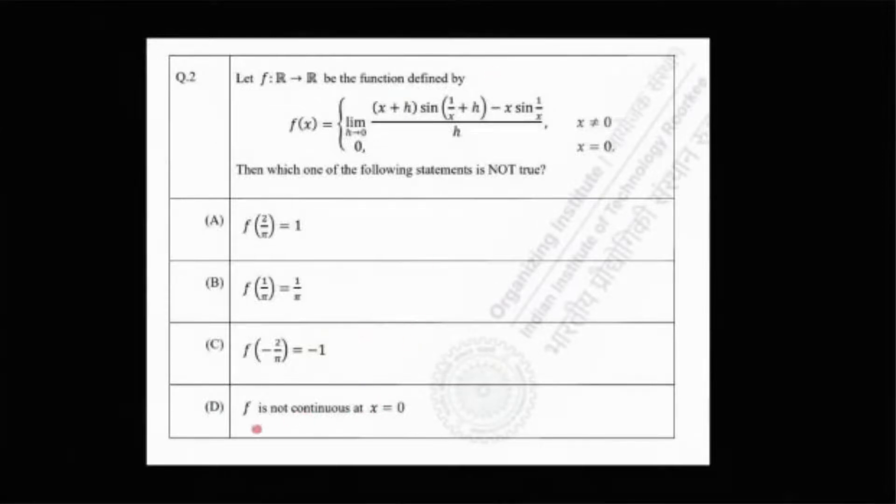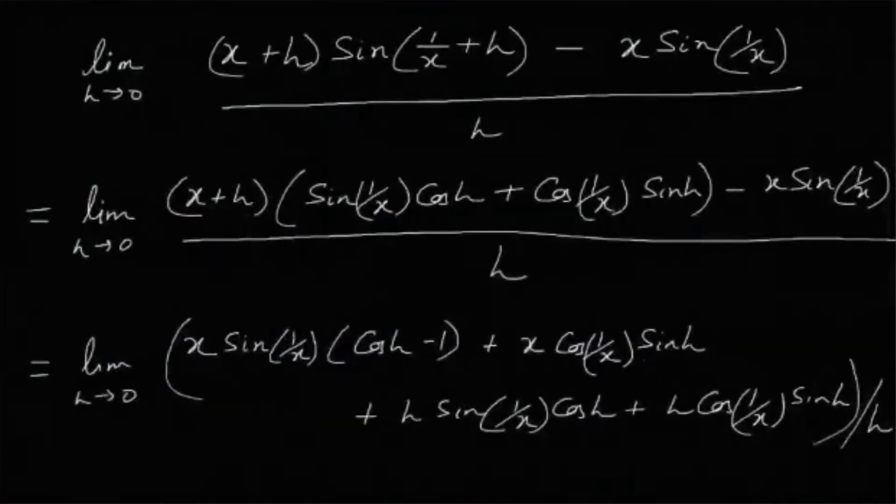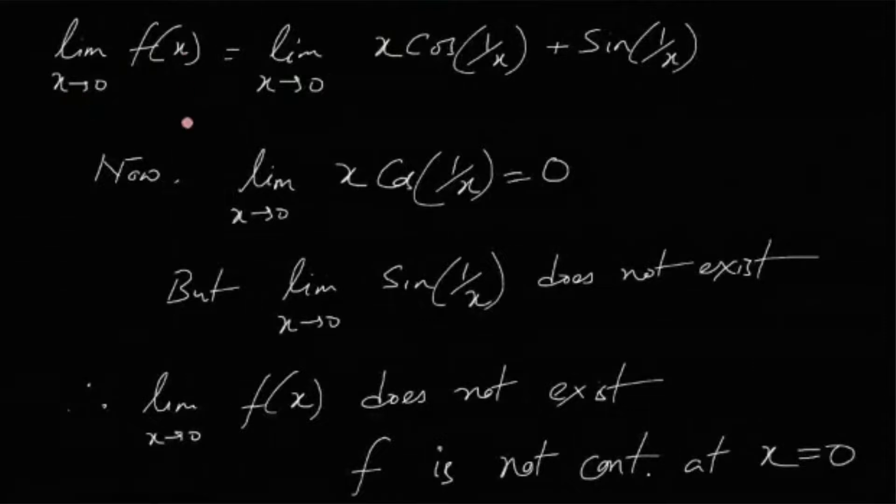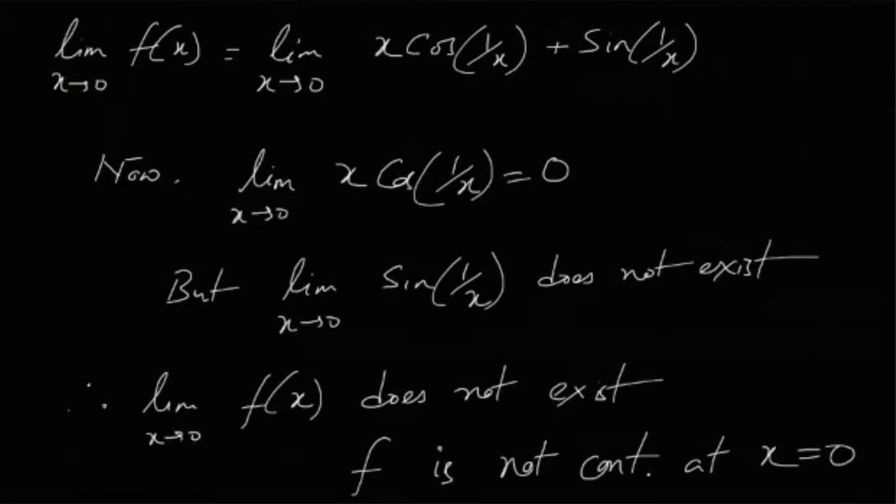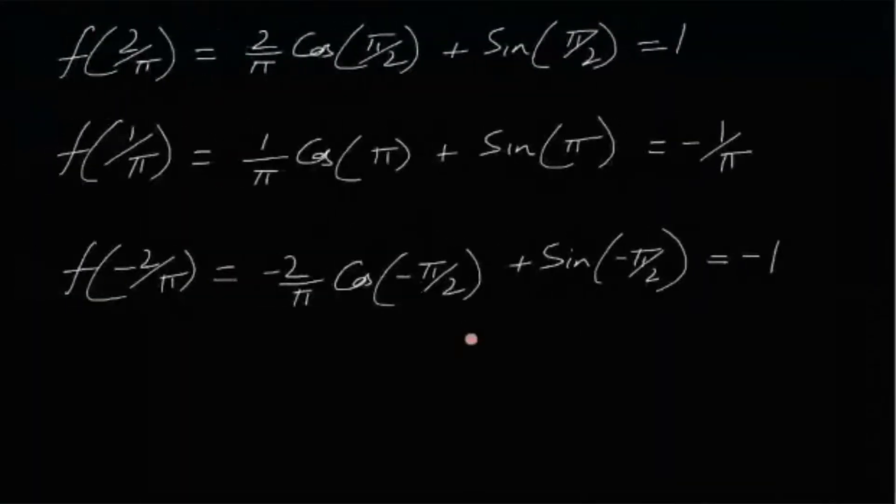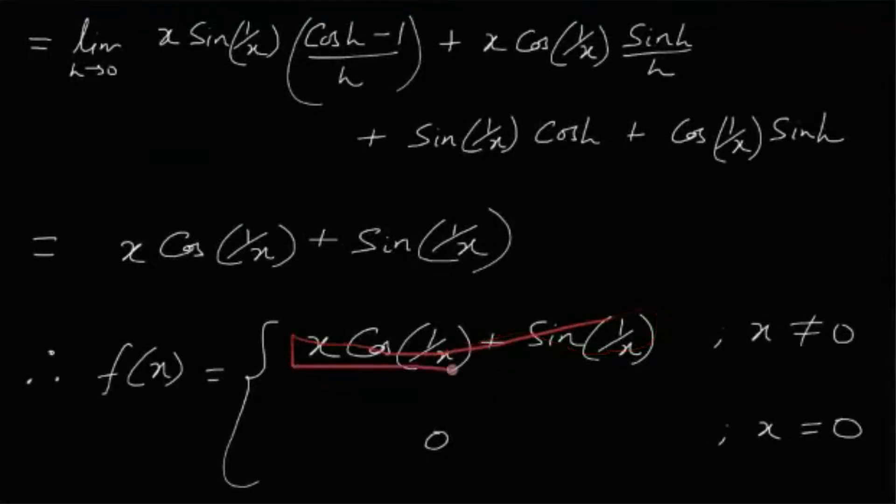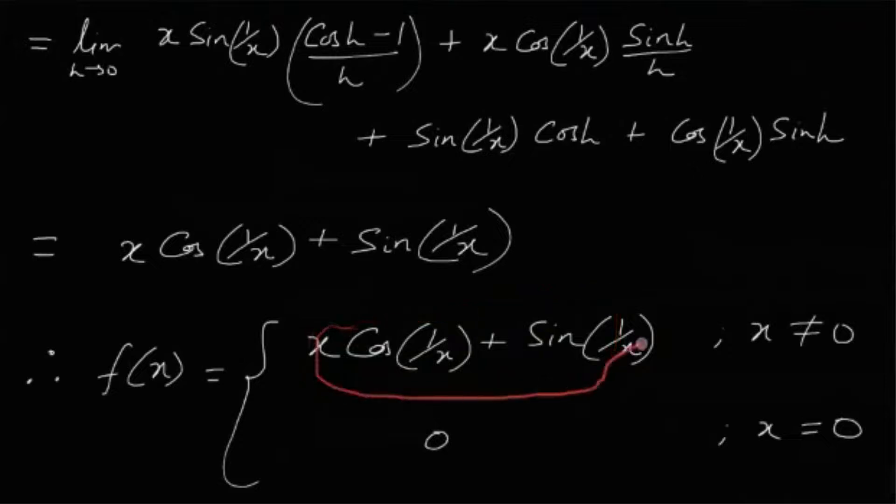Let us try to find the continuity of f at the point 0. So limit x tending to 0 of f(x) is actually limit x tending to 0 of this one because here x is not equal to 0, it is tending to 0, therefore we are using this part of the function. It is still not 0, so you use this part of the function, and obviously f(0) is 0.